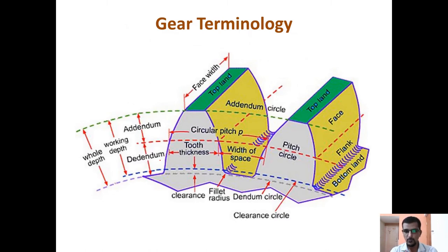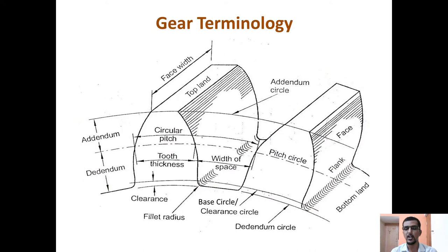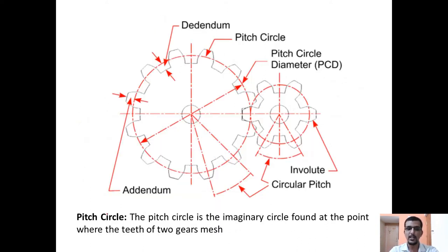We will consider a few teeth on a spur gear and explore the various terminologies associated with gears. To begin with, we start with the pitch circle. A pitch circle is an imaginary circle found at the point where the two gears are going to mesh. This is the point where the two gears will be in contact with each other.